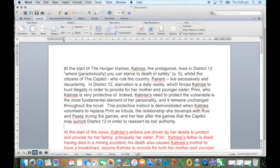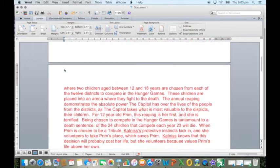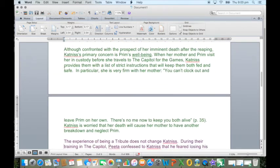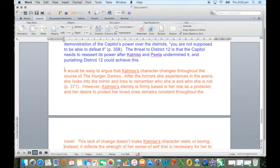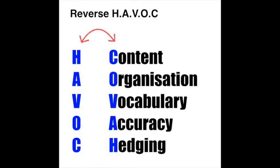So this is the finished product — well, the first draft anyway — of the Hunger Games essay. I've gone through and colour-coded each of the paragraphs: introduction, body paragraphs, and conclusion. That will make the editing process easier, which is what we're doing here with reverse HAVOC. We start by looking at the content, which I believe is the most important part of this editing, then we go into organisation, vocabulary, accuracy, and hedging. Doing all these things is really going to polish your essay and create the best possible result.